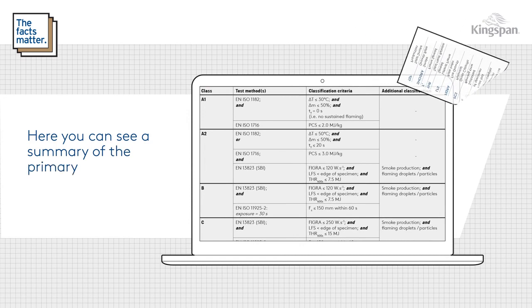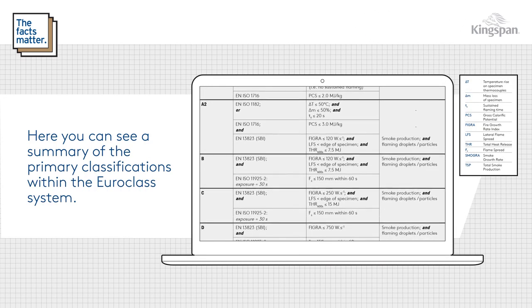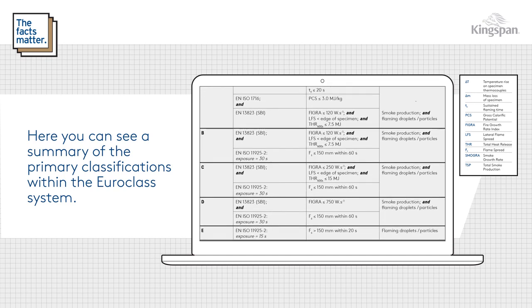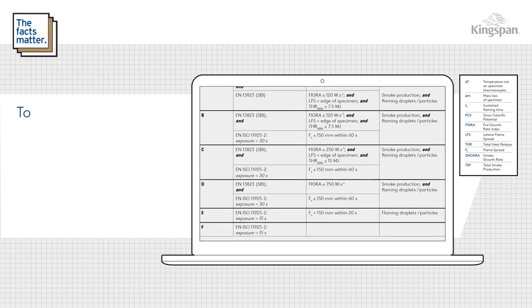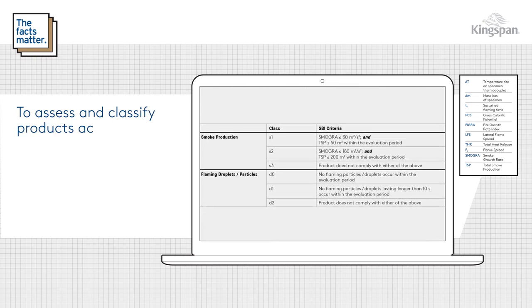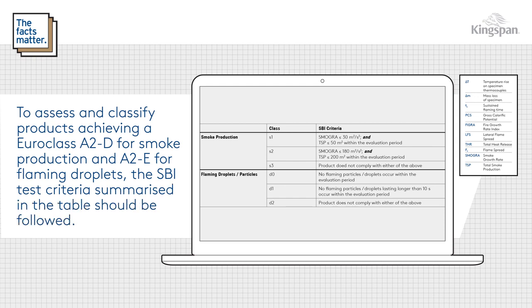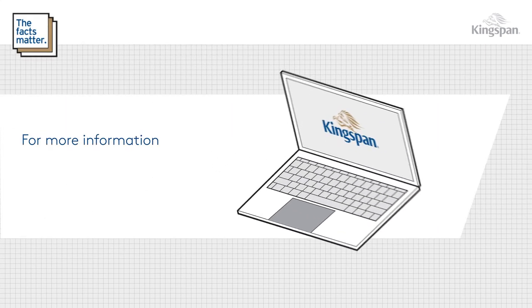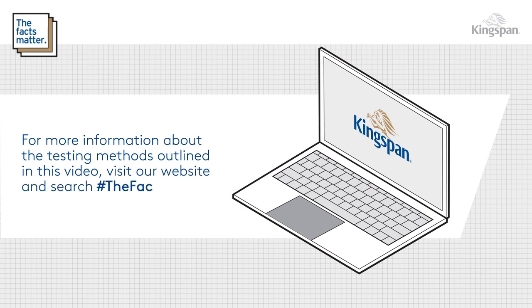Here you can see a summary of the primary classifications within the Euroclass system. To assess and classify products achieving a Euroclass A2 through to D for smoke production, and A2 through to E for flaming droplets, the SBI test criteria summarised in the table should be followed. For more information about the testing methods outlined in this video, visit our website and search hashtag the facts matter.